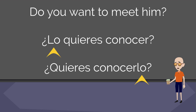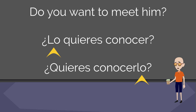Now let's look at a sentence where there is an infinitive, so we have some options for where to place the direct object pronoun. 'Do you want to meet him?' — remember 'conocer' can also mean to meet someone for the first time. We can either put it before the conjugated verb: '¿Lo quieres conocer?' Or we can attach it to the infinitive at the end: '¿Quieres conocerlo?'